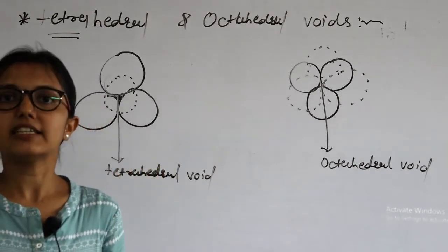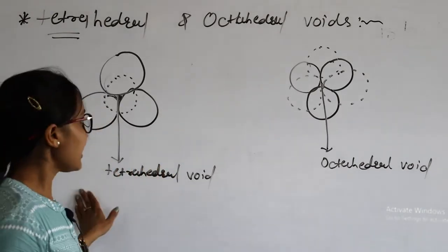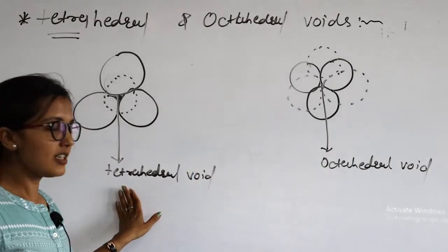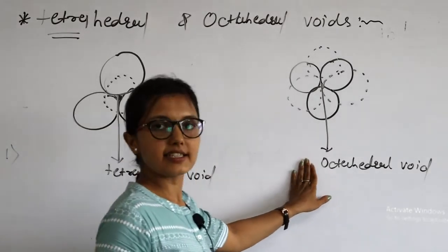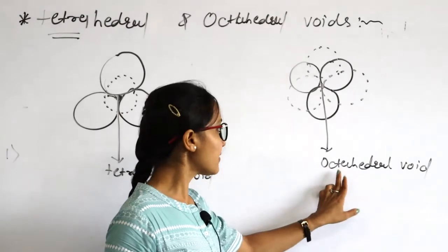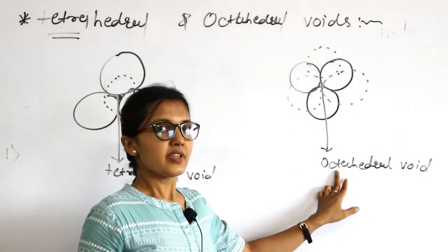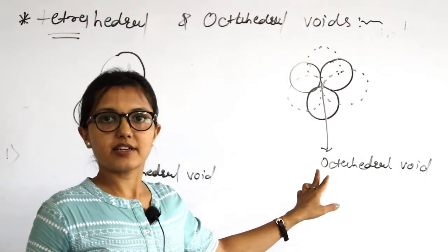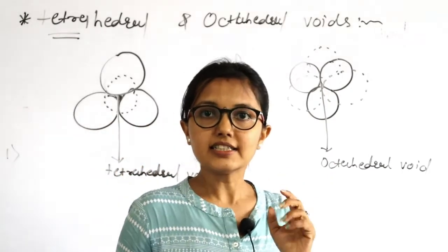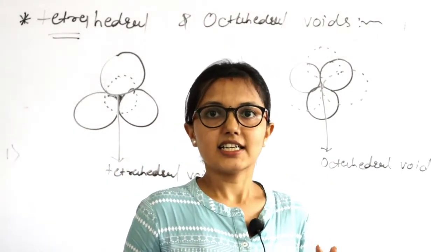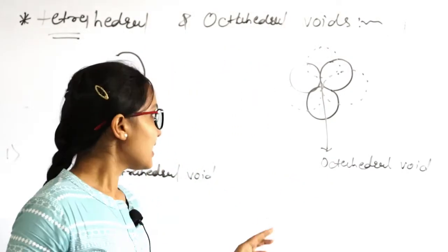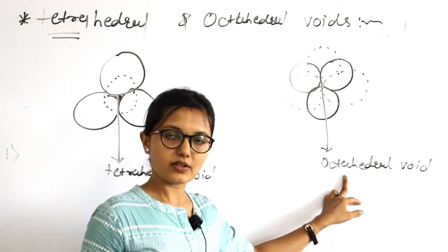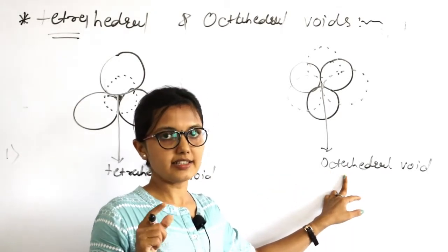In octahedral, octa means six — so each atom or sphere is surrounded by another six spheres or atoms. That is why this is indicated as an octahedral void. This is the first point of difference between tetra and octa.